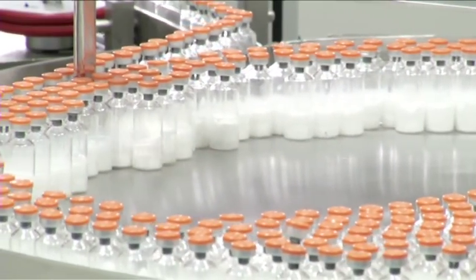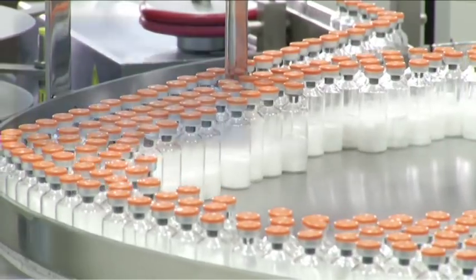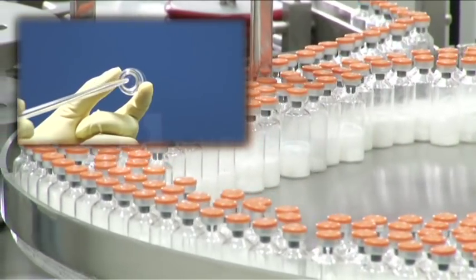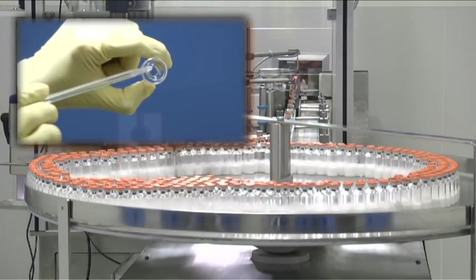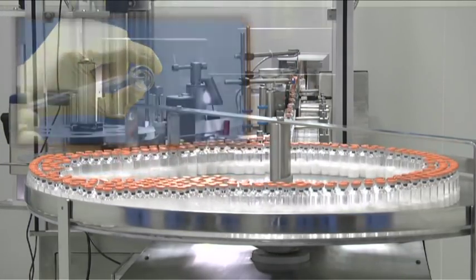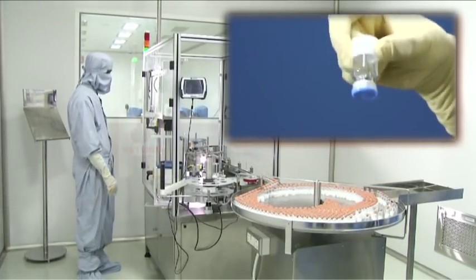For its lyophilized products, Hetero uses the Schott lyo vials. These vials have an ultra-thin hydrophobic layer on the inside and optimized flat-base geometry for high-efficiency freeze drying. This unique feature also prevents collapse of the lyophilized cake.